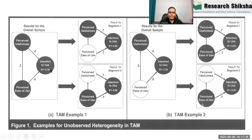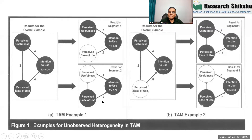When you run the model on the complete dataset, the path coefficients may come out as 0.3, 0.4, and 0.4 with an R square of only 30%. You may not be happy with 30%. But when you apply POS and divide the data into two segments, it is possible that R square becomes 50% in one segment and 50% in another. One thing to check is that the R square of both segments increases after applying POS. It may also be possible that one path coefficient becomes insignificant while another becomes very high, and as a result the R square of both segments is very high.